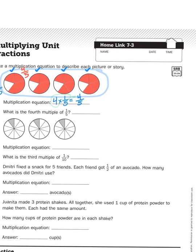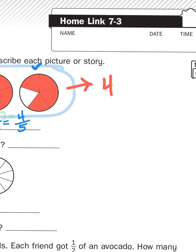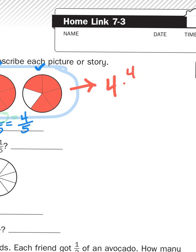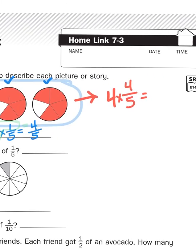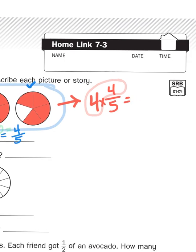Now, I could just count all the pieces one by one, but multiplication is easier. So, same number of circles, right? But now, a different number of fractions are colored in. So, I'm going to multiply four times four-fifths. And again, all I have to do here is think about the numerator. And what's four times four? Well, you and I both know, hopefully at this point in your fourth grade career, that four times four is sixteen.